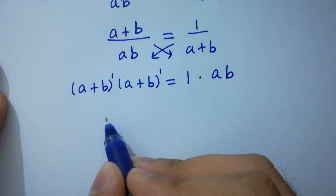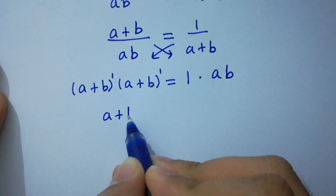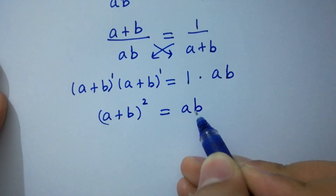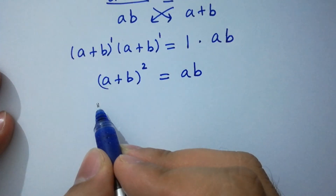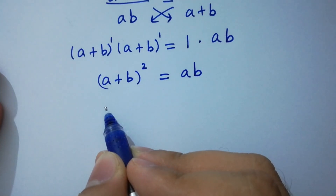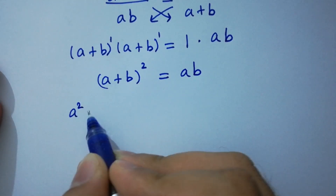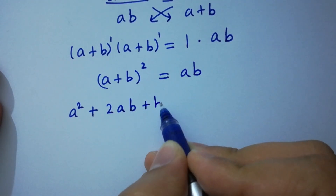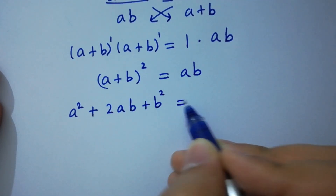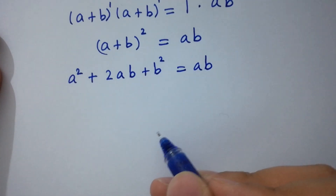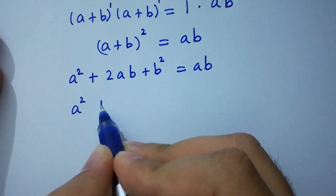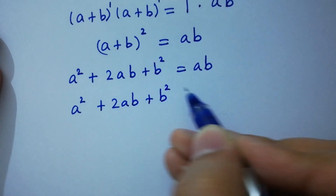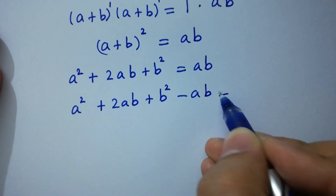So a plus b to the power 2 equals ab. Expanding, a plus b squared is equal to a squared plus 2ab plus b squared, which equals ab.